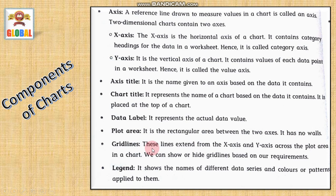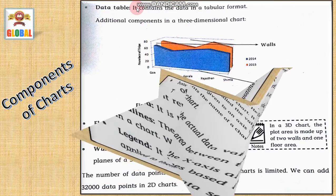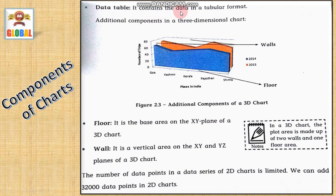Next component is gridlines. These lines extend from x-axis and y-axis across the plot area in a chart. We can show or hide grid lines based on our requirement. The last component is a legend. It shows the name of different data series and colors or patterns applied to them. It gives you the names of the data that is shown in that chart. Next is data table. Data table contains the data in a tabular format.